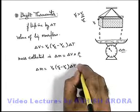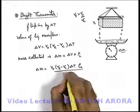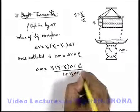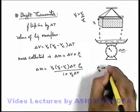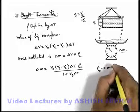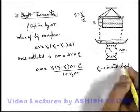Higher temperature can be written as ρ_l0 upon (1 + γ_liquid × ΔT), where ρ_l0 is the initial density of liquid. This can be written as initial density before rise in temperature.